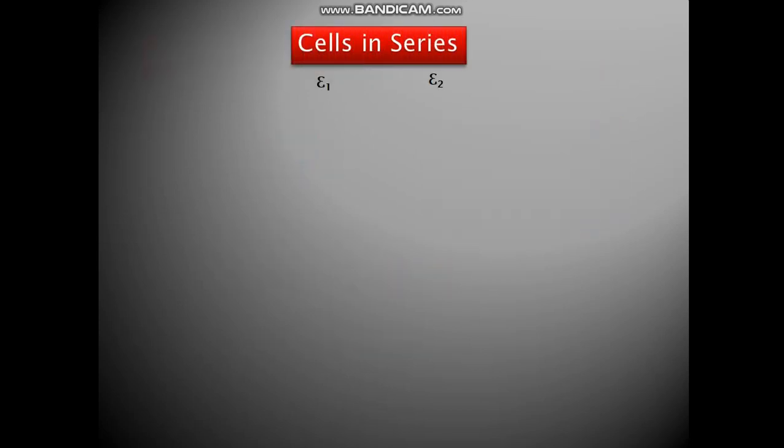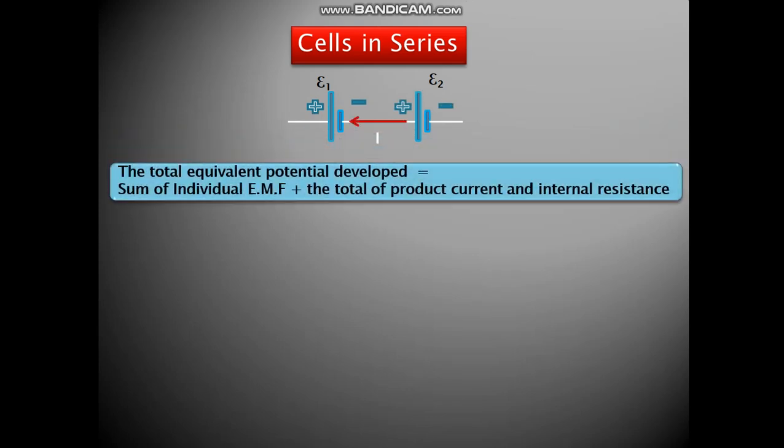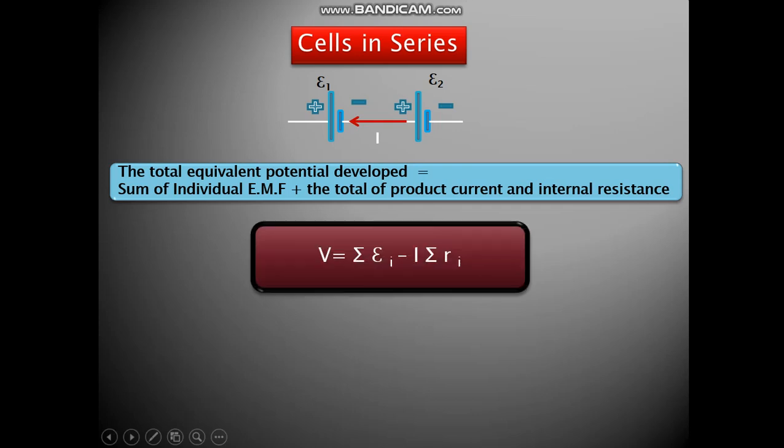Now we take the cells in series. We have the current going from positive to negative. The total equivalent potential developed is equal to sum of individual EMFs minus total product of current and internal resistance. So V is equal to summation Ei minus I into summation Ri, where i goes from 1 to N, number of cells.